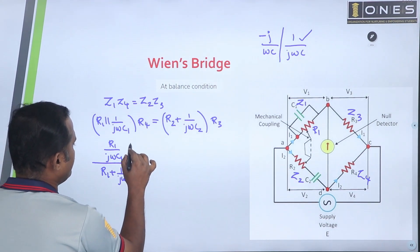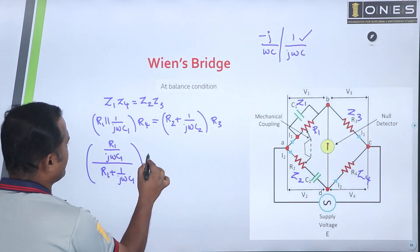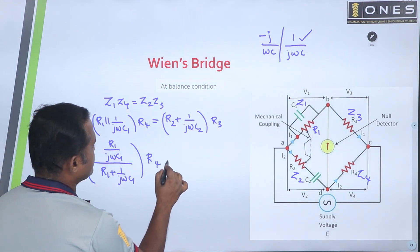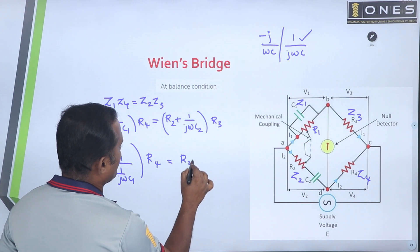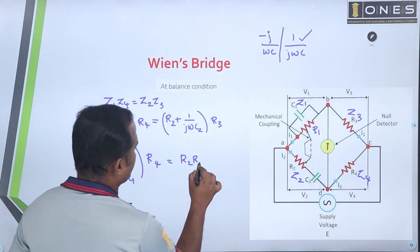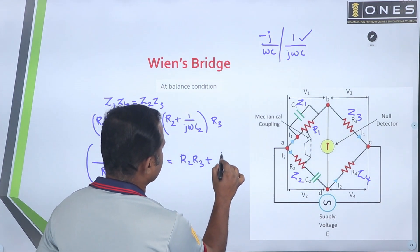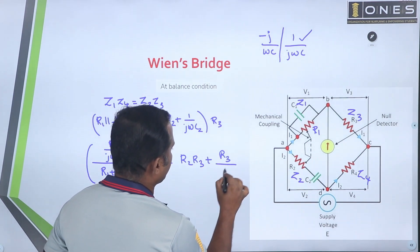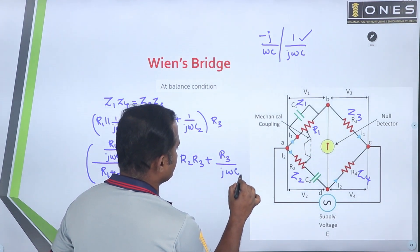The balance condition gives us: set 3 multiplied by R4 equals R2·R3 plus R3 over j-omega-C2. That is, the product of set 1 and set 4 equals the product of set 2 and set 3.